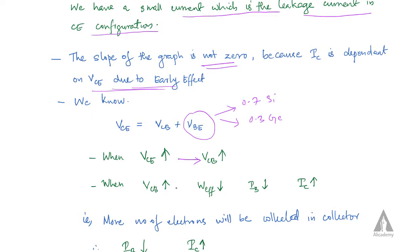As VCE increases, the reverse biasing of the collector-base junction increases. As we saw in the input characteristics, when reverse biasing increases, the effective width of the base will decrease.